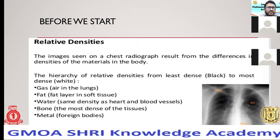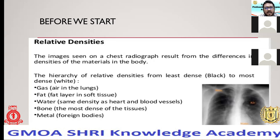Before we start, X-rays are all about black and white because X-rays are used to penetrate your body and get an image. It will be either black or white with densities in between. There is a relative hierarchy of densities: gas has the least resistance to X-ray penetration and appears dark, while metal has the most resistance and appears very bright white. In between, you have fat, soft tissues, and bone.